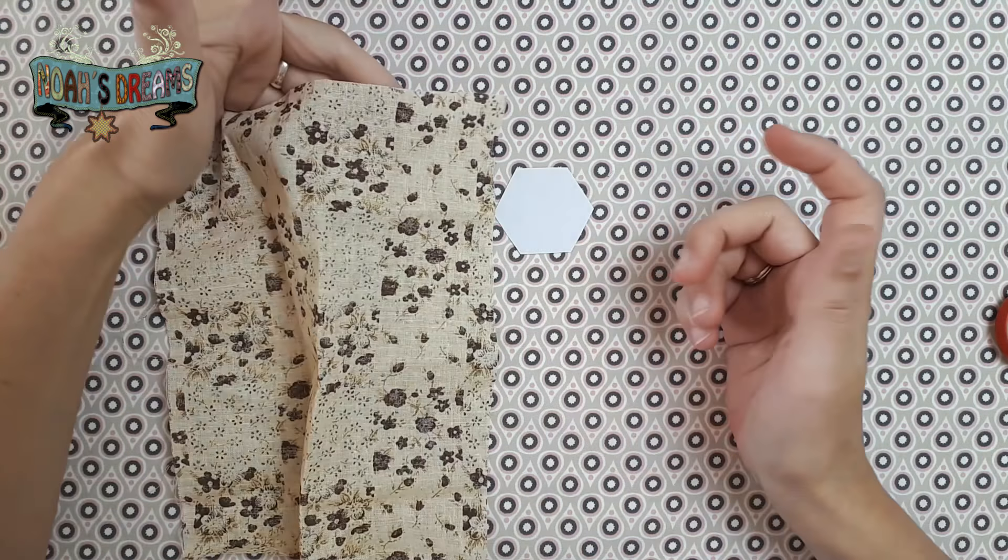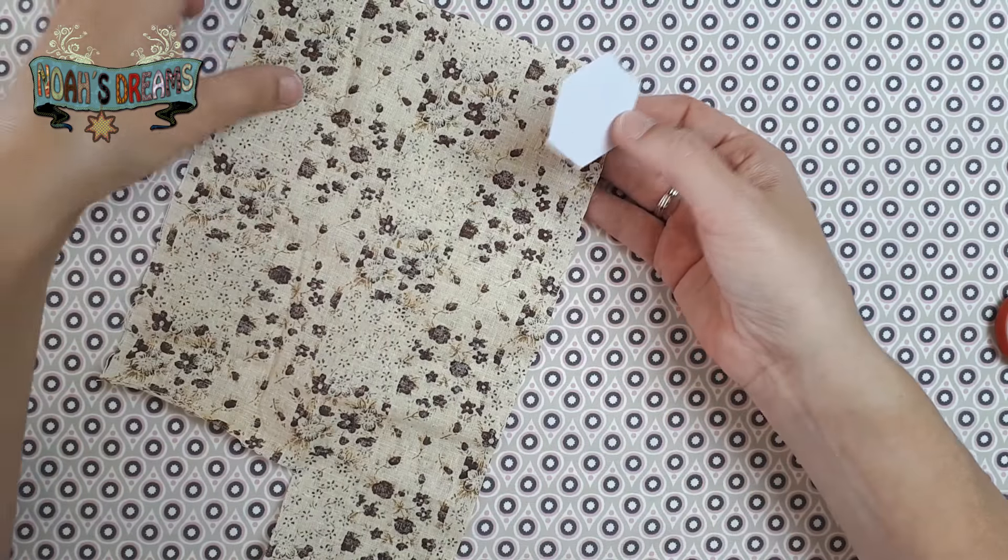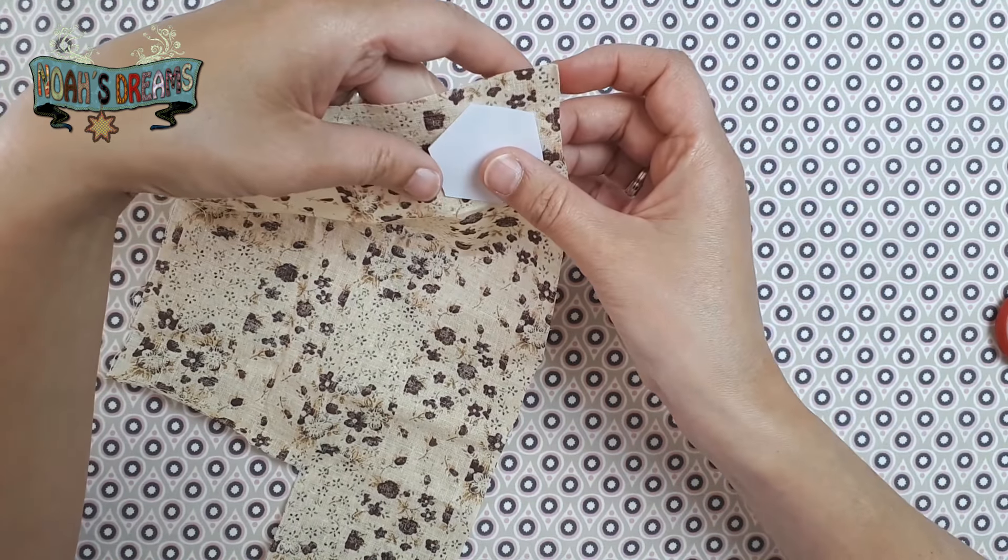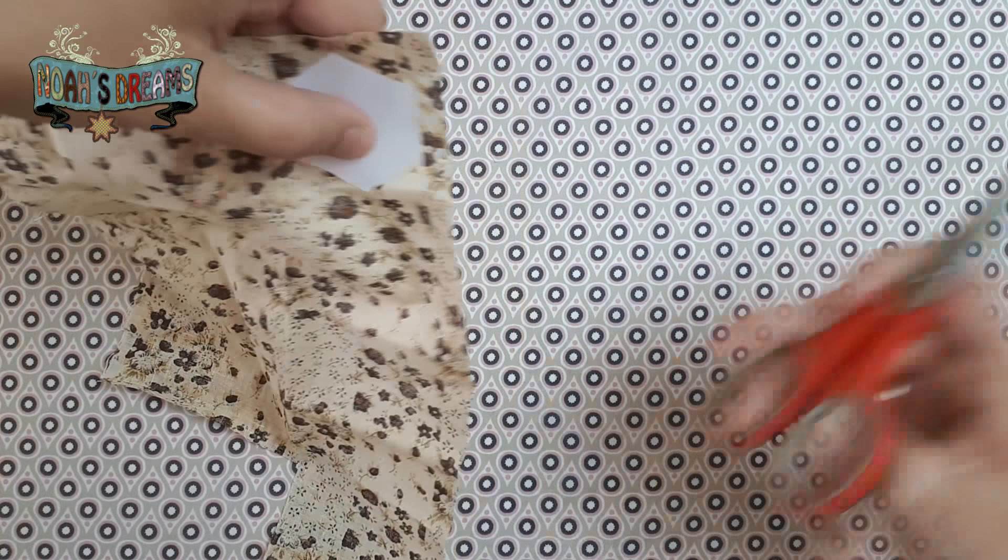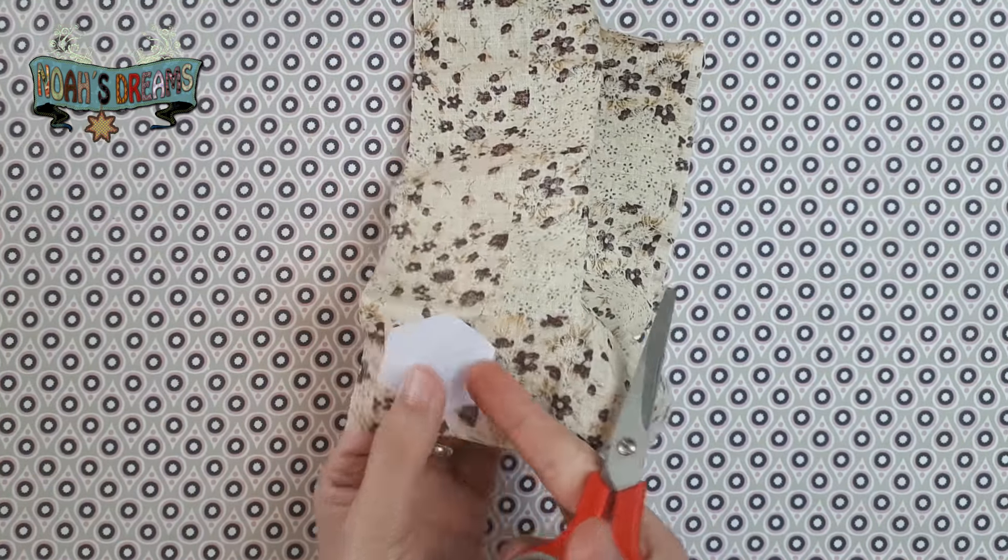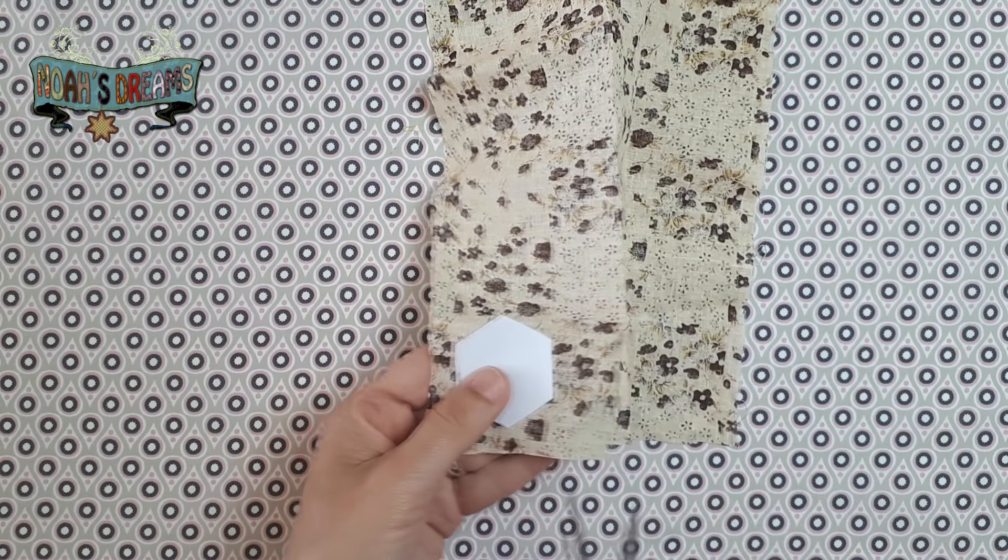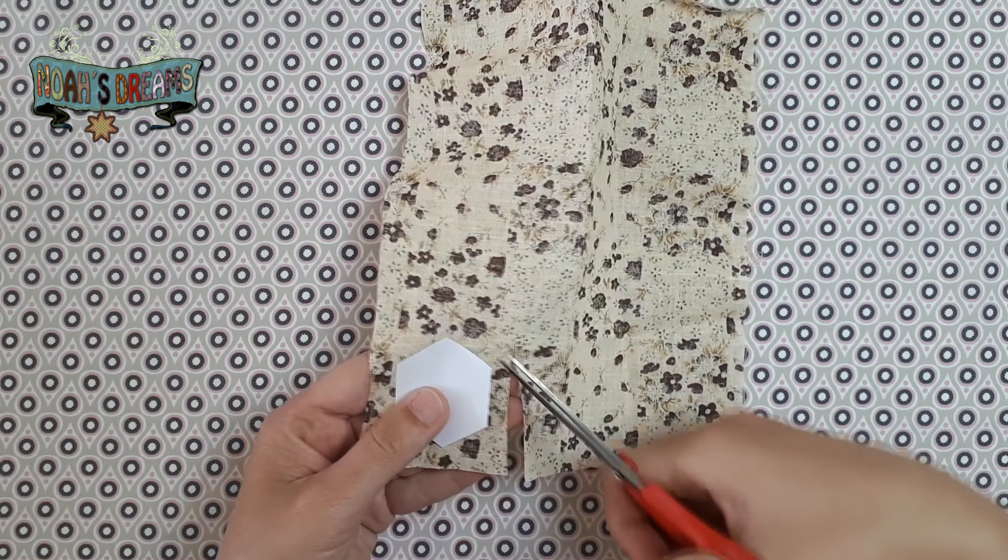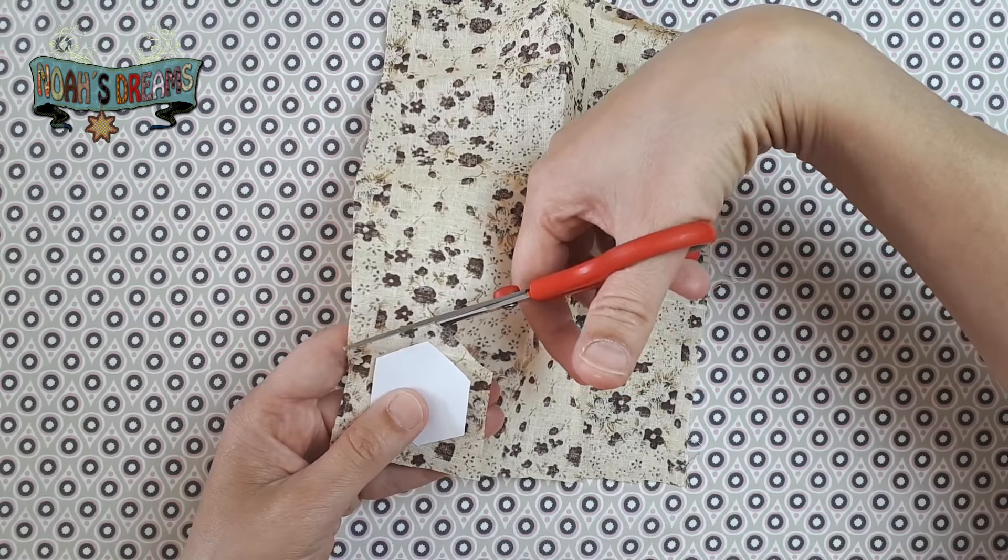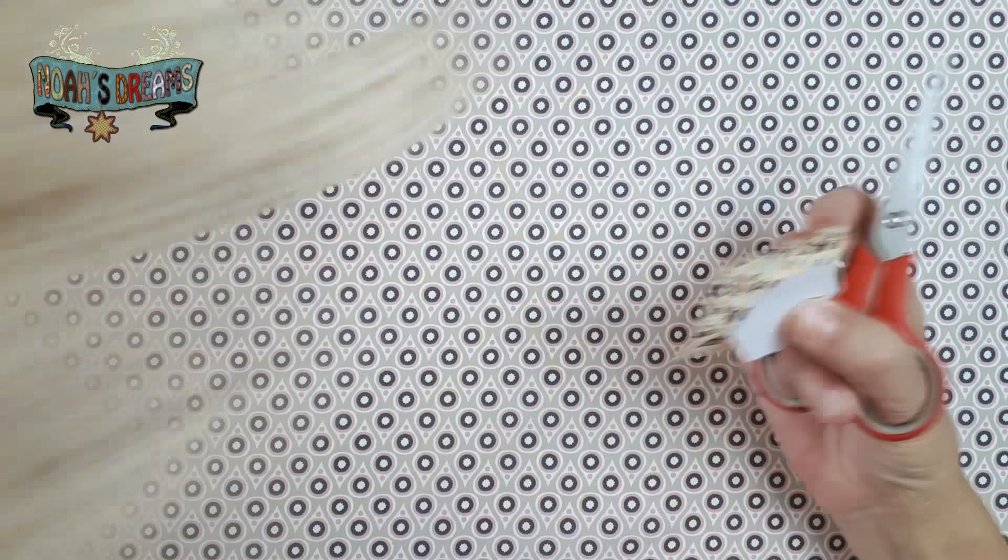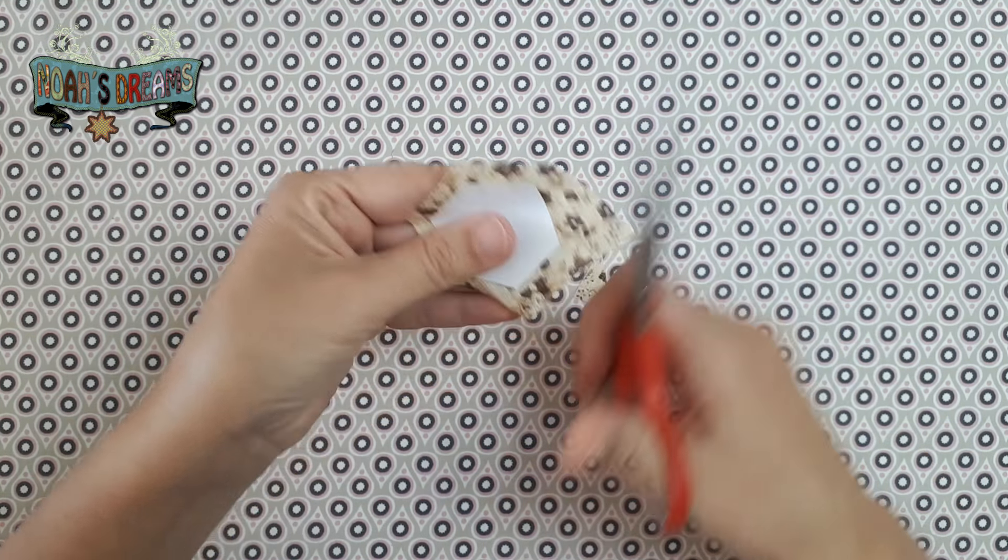Esta plantilla de papel es la que vamos a utilizar con cualquier retalete en el que nos entre la plantilla. Y lo que vamos a hacer es replantearla por encima, en torno a medio centímetro, un centímetro del borde de la tela, vamos a recortar la figura. Vamos a hacer una, aunque lo que sugiero hacer en este tipo de técnicas es trabajar en bloque. Es decir, si os ponéis a hacer hexágonos de una tela en particular, pues vais a hacer unas cuantas. Recortamos bien todo alrededor.